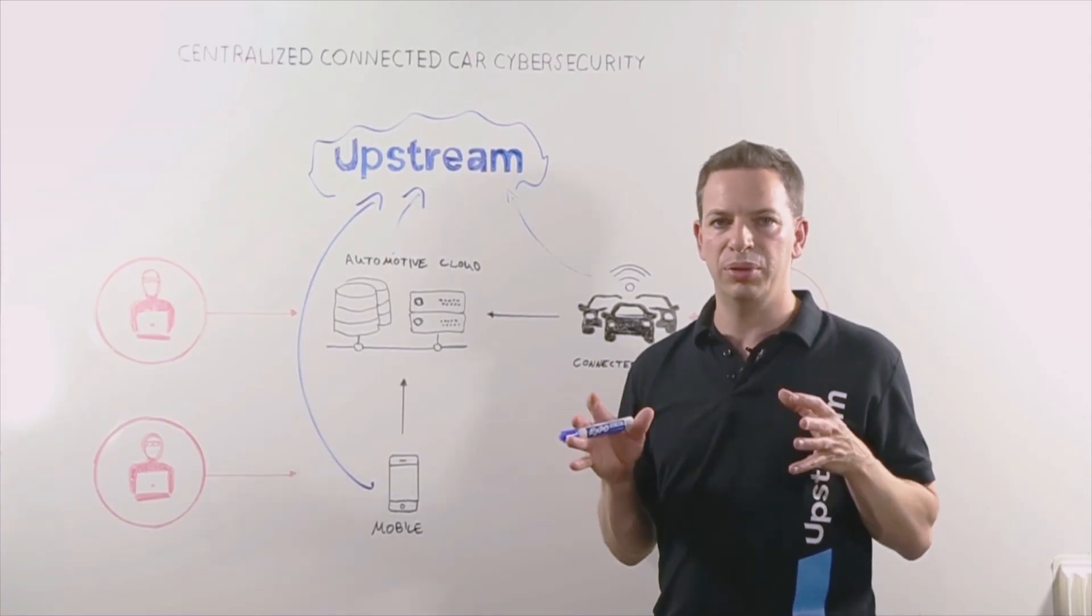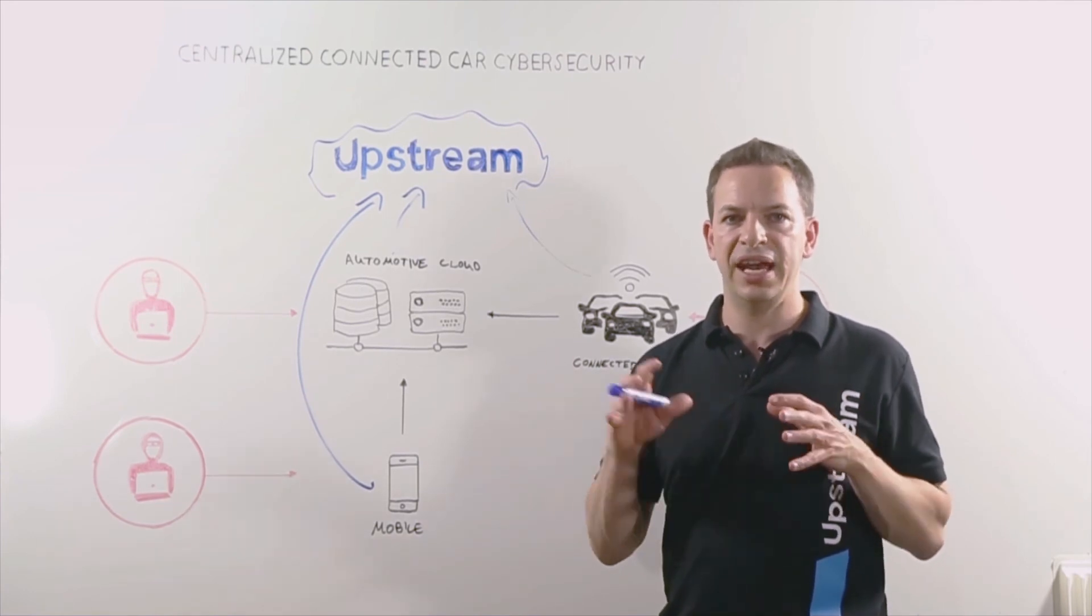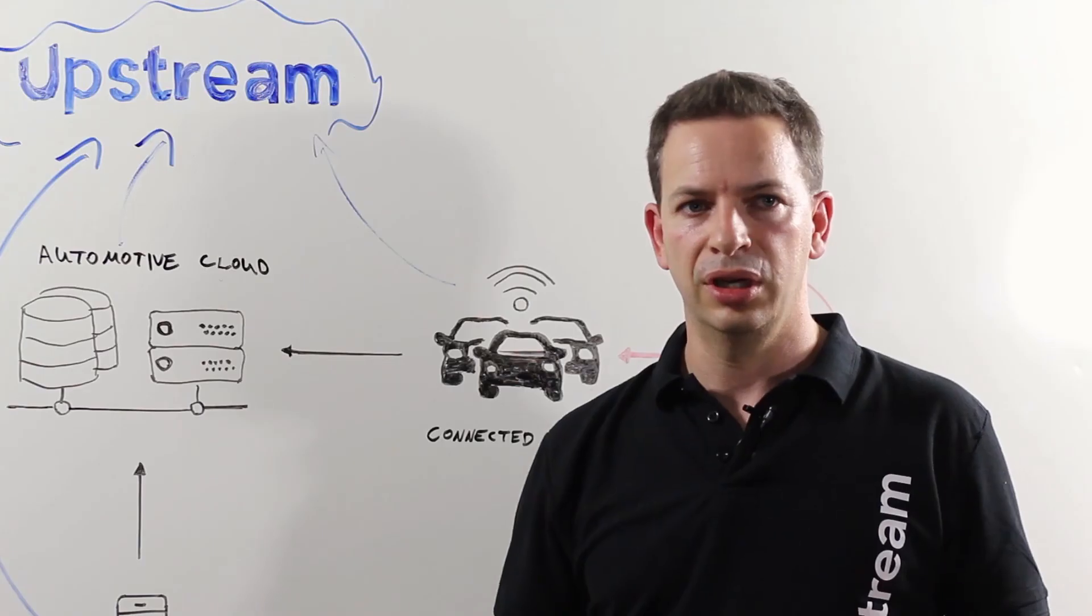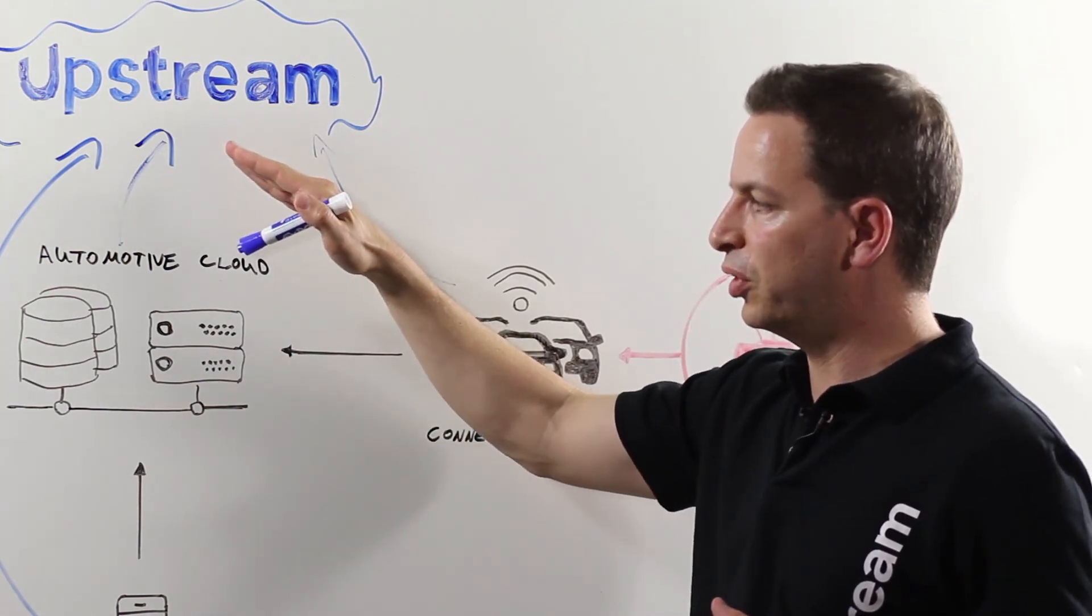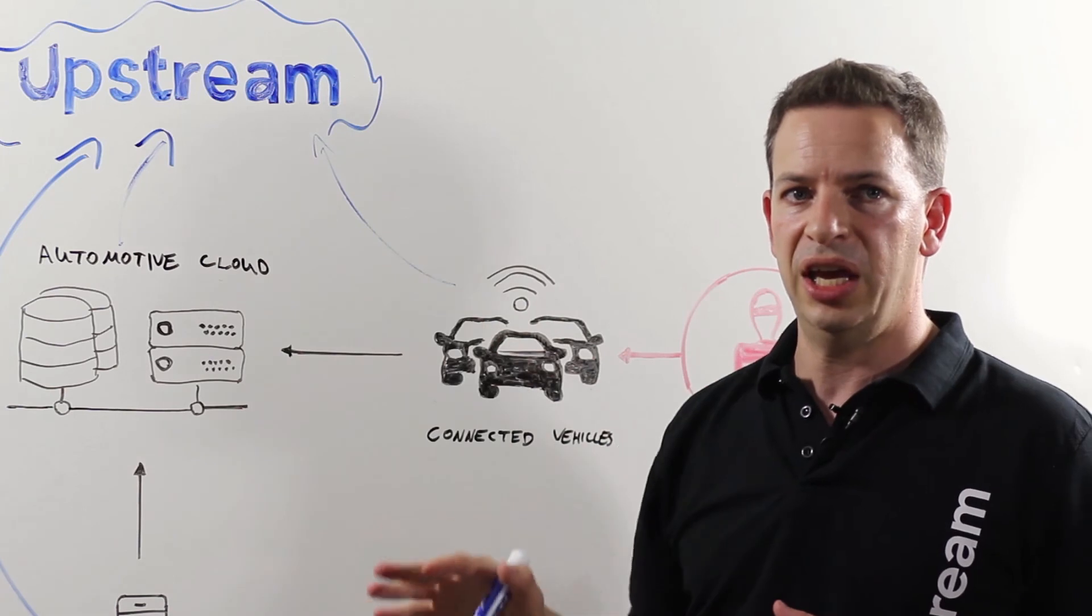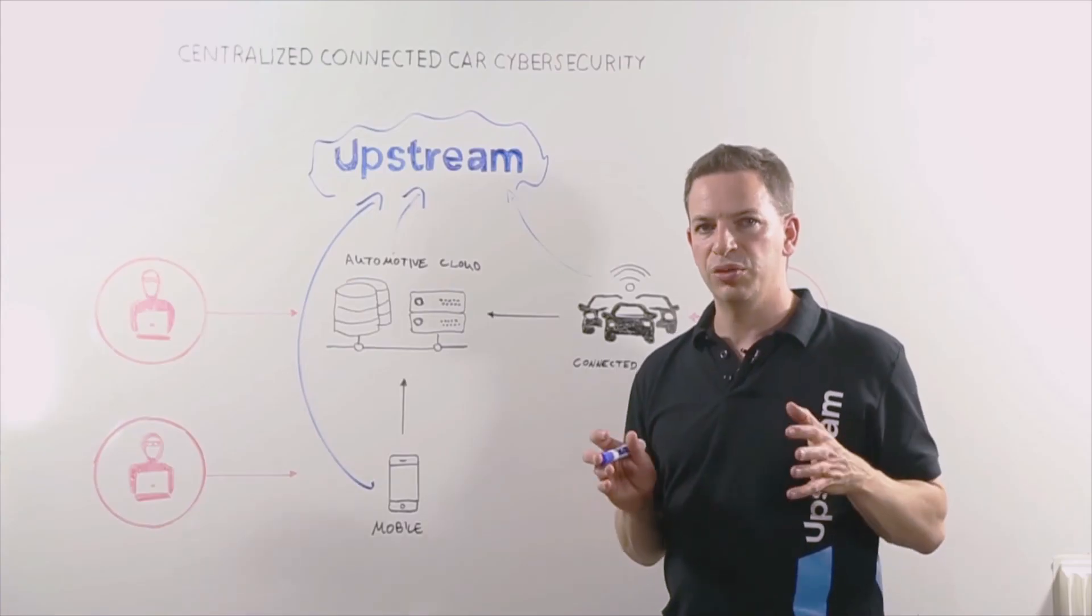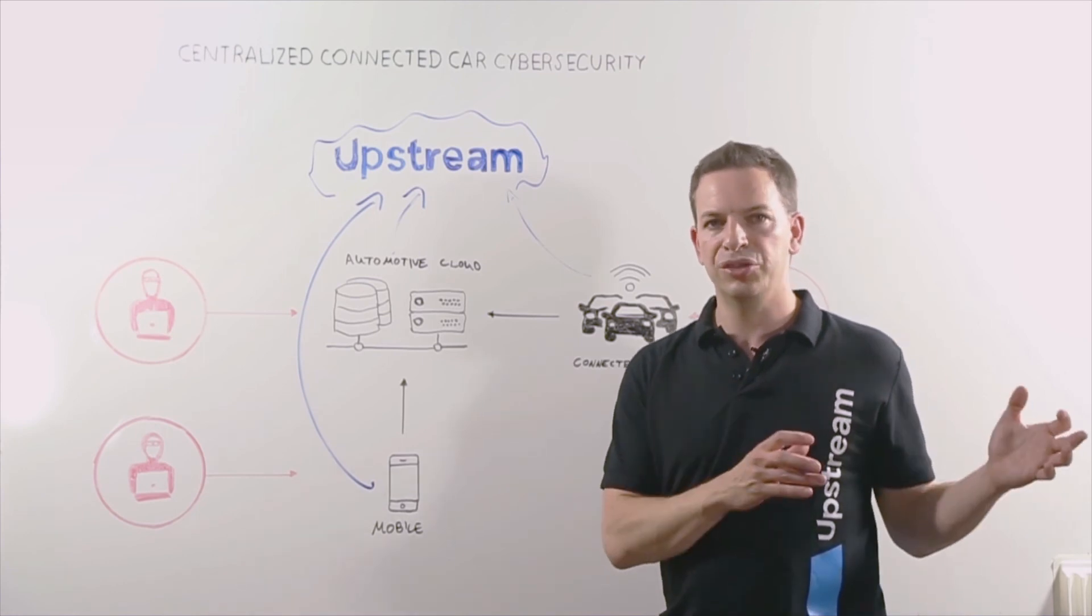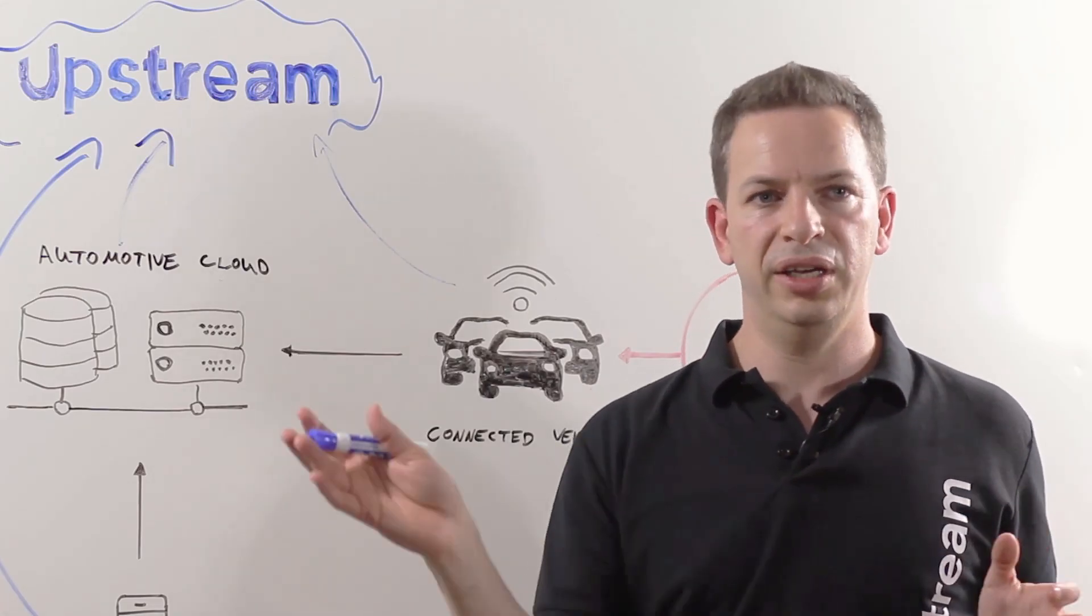Once we understand what the normal behavior is, we're now able to detect any violations, anything that's outside of the norm. We define what normal is starting from the protocols that the automotive cloud uses all the way up to the behavior of the app servers and the vehicles themselves. Once we define what the norm is, we're able to detect what is outside of the norm and use that information to create incidents.